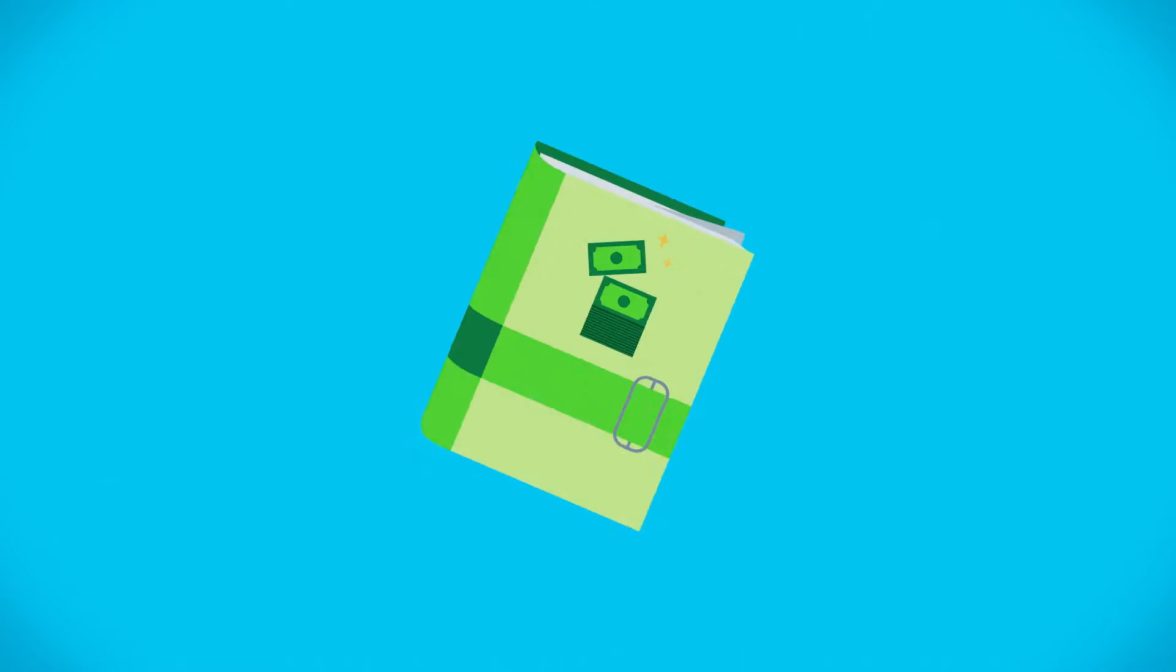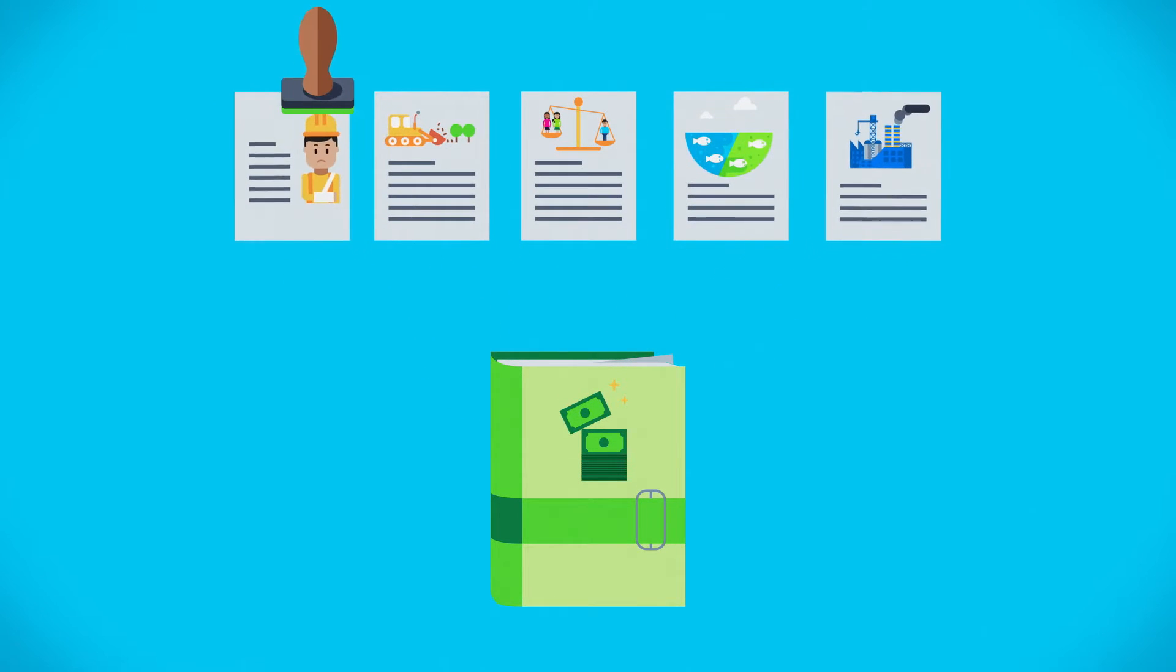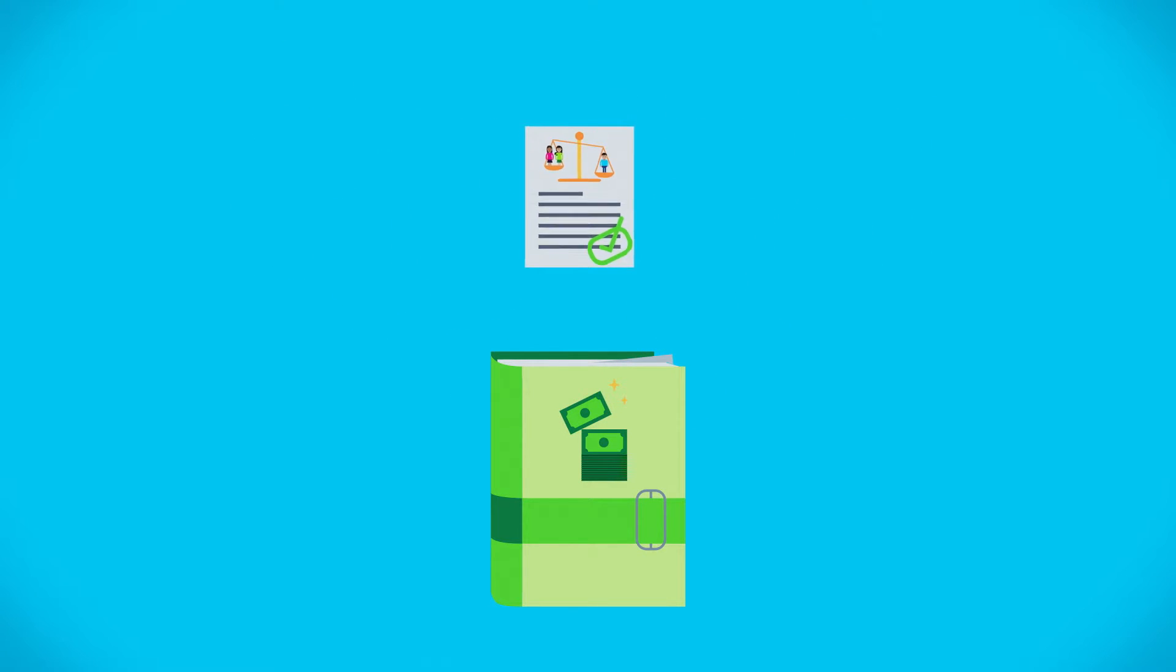Regarding the loan agreement itself, what elements should it contain? The environmental and social requirements that resulted from the due diligence must be included in the loan agreement. In practical terms, the loan agreement must include first, the action plan that was agreed with the client and which lists the actions necessary to meet the requirements.